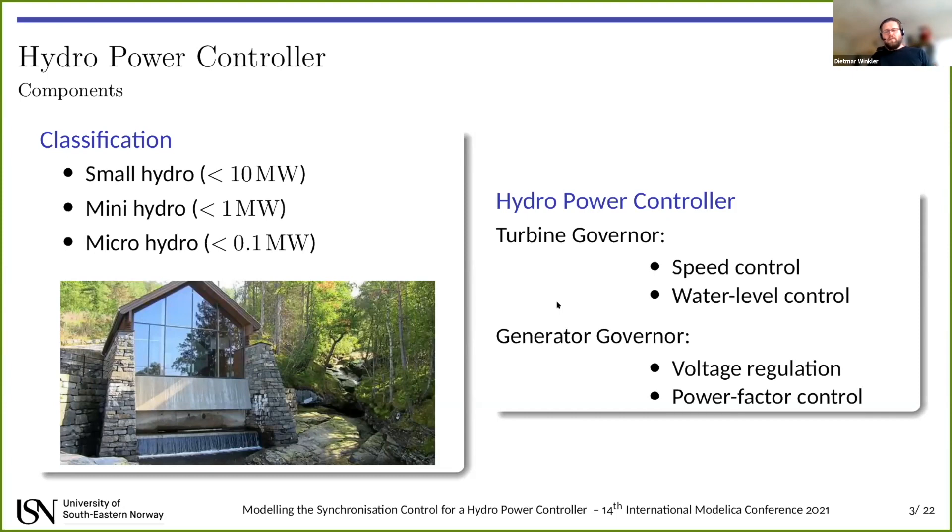The hydropower controller typically consists of two parts. You have a turbine governor and a generator governor. The turbine governor takes care of regulating or controlling the turbine, whilst the generator governor is for the generator part. The turbine governor can have different functions included. In this case, we're talking about the speed control and the water level control, but there are also other functions available in typical hydropower controllers. The same for the generator governor. Here I'm going to talk about voltage regulation and the so-called power factor control, which you can also think of as part of the voltage regulation.